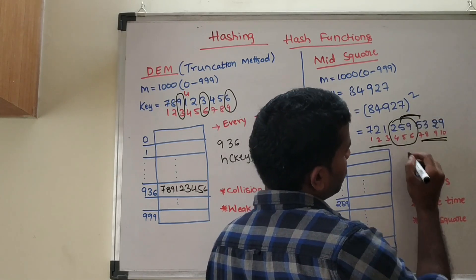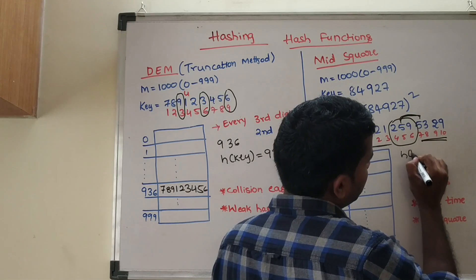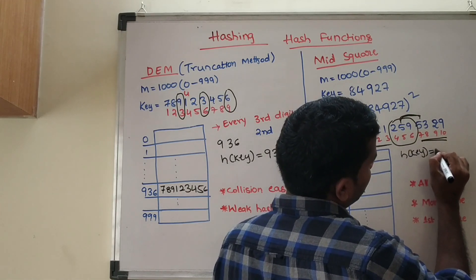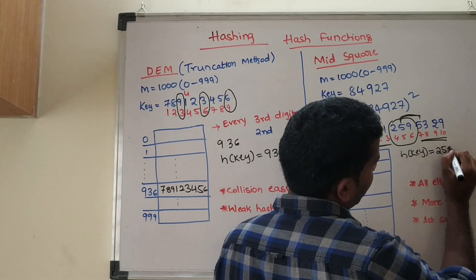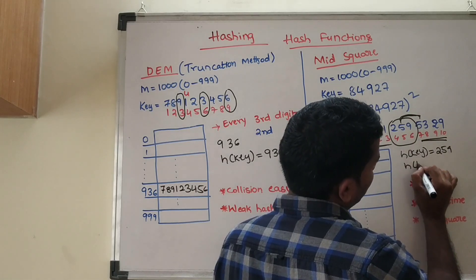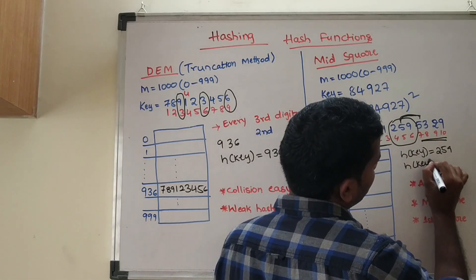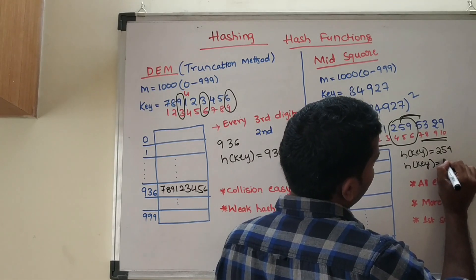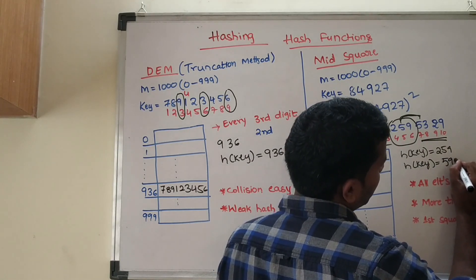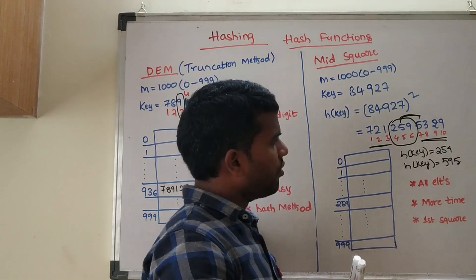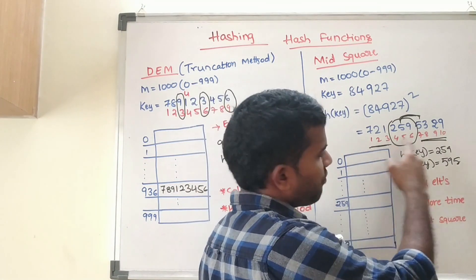You can also take these three. There is a possibility of h(key) equals to 259 and h(key) equals to 595. So always go from left to right.